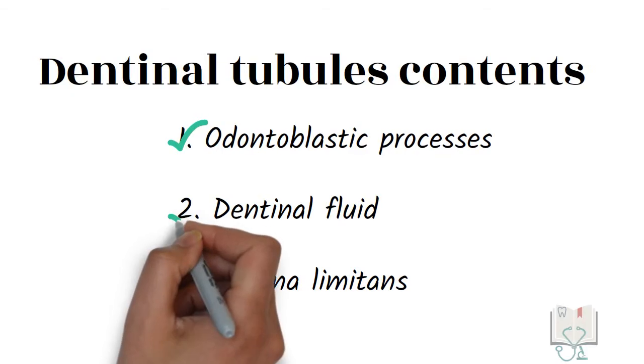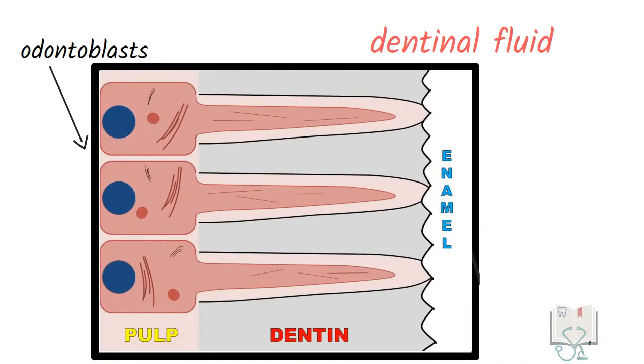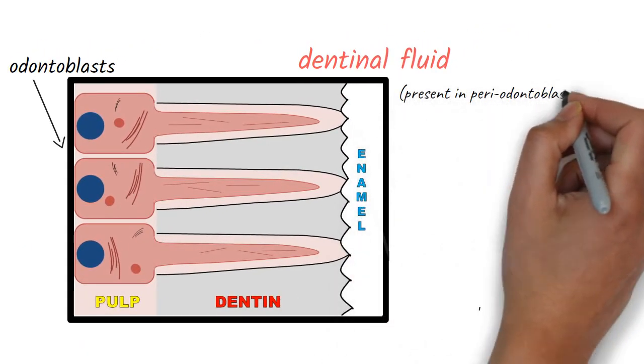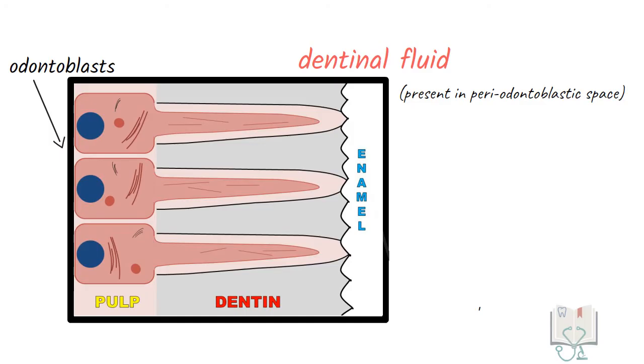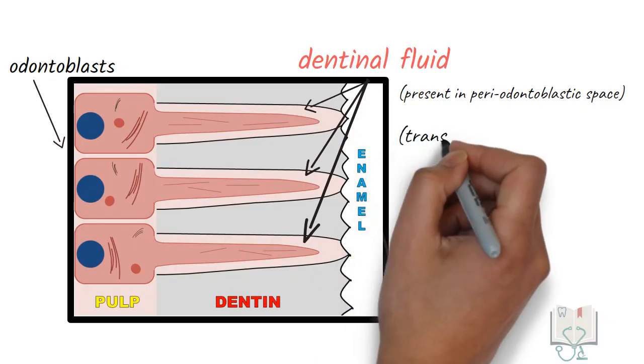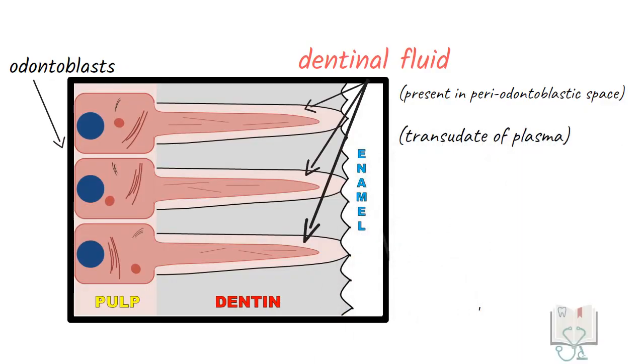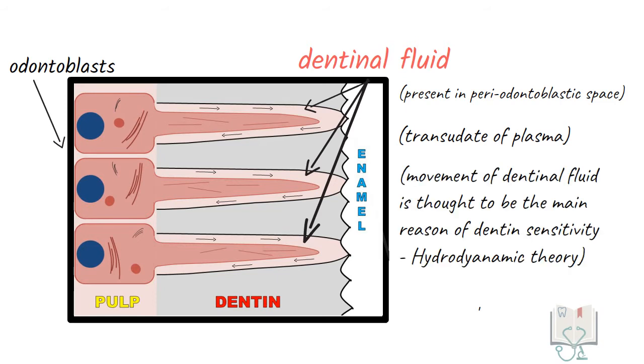Next, dentinal fluid. Dentinal fluid is a fluid present in the perio-odontoblastic space located between the odontoblastic process and the wall of the dentinal tubule. This fluid is formed by the transudate of plasma from the blood vessels in the pulp. The movement of this dentinal fluid is thought to be the main reason of dentine sensitivity.